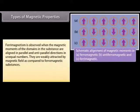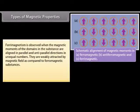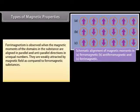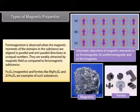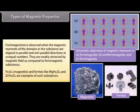Ferrimagnetism is observed when the magnetic moments of the domains in the substance are aligned in parallel and anti-parallel directions in unequal numbers. They are weakly attracted by a magnetic field compared to ferromagnetic substances. Fe₃O₄ (magnetite) and ferrites like MgFe₂O₄ and ZnFe₂O₄ are examples of such substances.